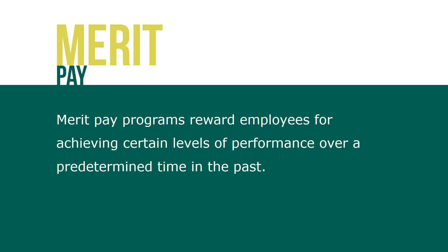Merit pay programs reward employees for achieving certain levels of performance over a predetermined time in the past. The logic is straightforward: employees who perform at higher levels should receive greater rewards. With a typical merit pay increase, employees receive a compensation adjustment based on the results of their performance evaluation. The performance ratings they receive are then used to allocate merit pay increases. For example, employees with a low rating of 1 on a 5-point rating scale might receive a merit increase of 0% or maybe 1%, and as performance ratings increase, so too does the merit increase allocated.